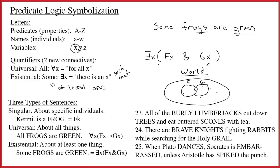The most important takeaway is that all sentences we're going to symbolize over the next couple of weeks are singular, universal, or existential. Singular sentences are about named individuals and don't use quantifiers. Universal sentences talk about everything in the world — all, every, everyone, everything. Existentials talk about something, where some means at least one. If you have a universal, it will almost always have the standard arrow structure; existentials will have the standard ampersand structure.